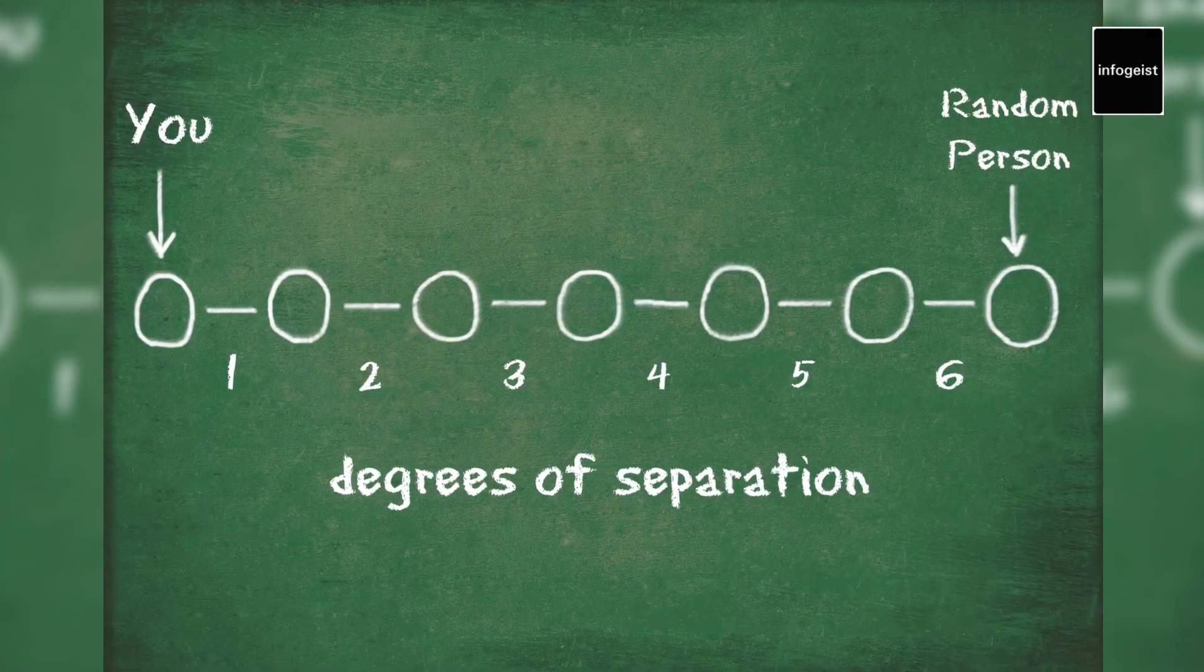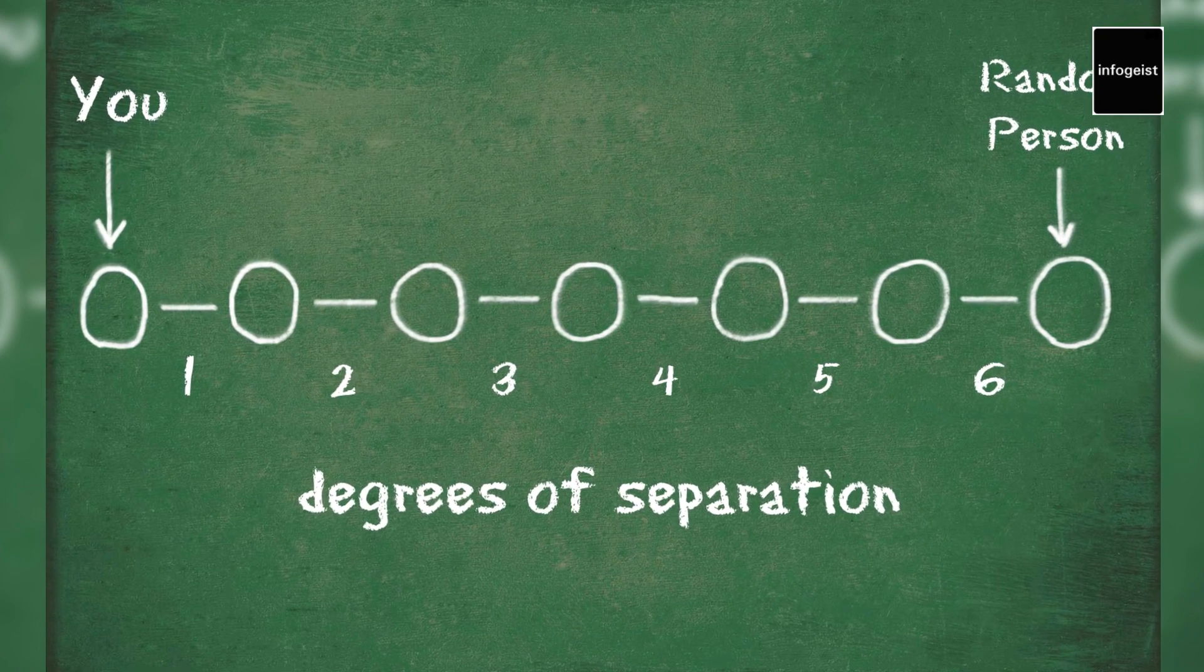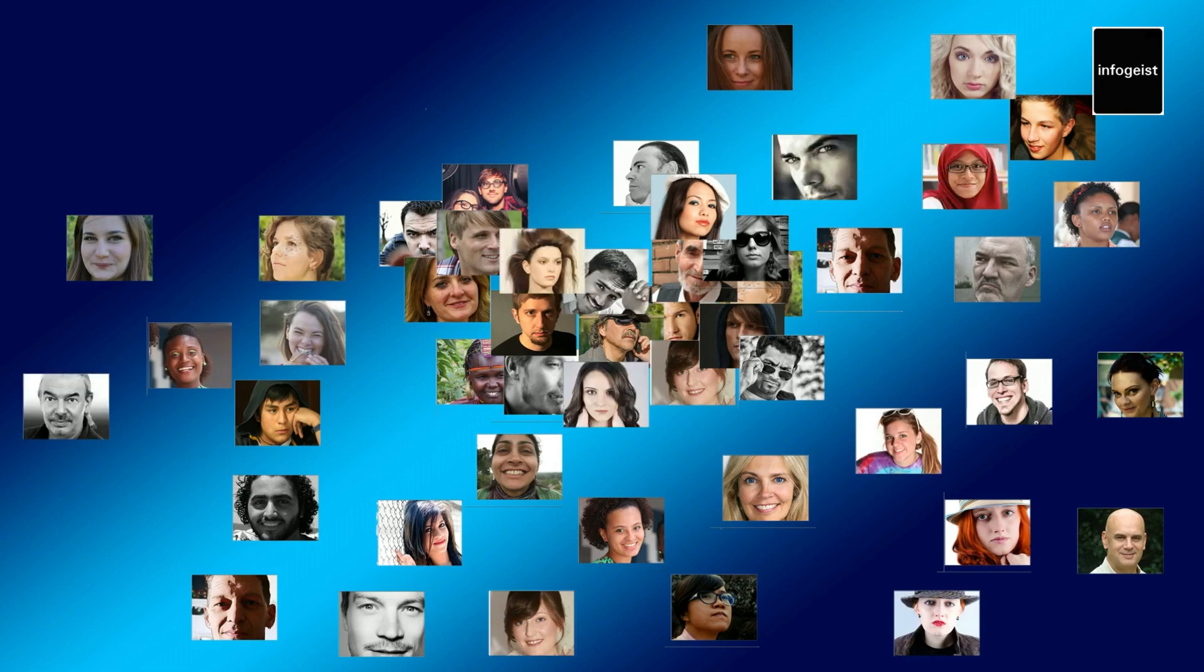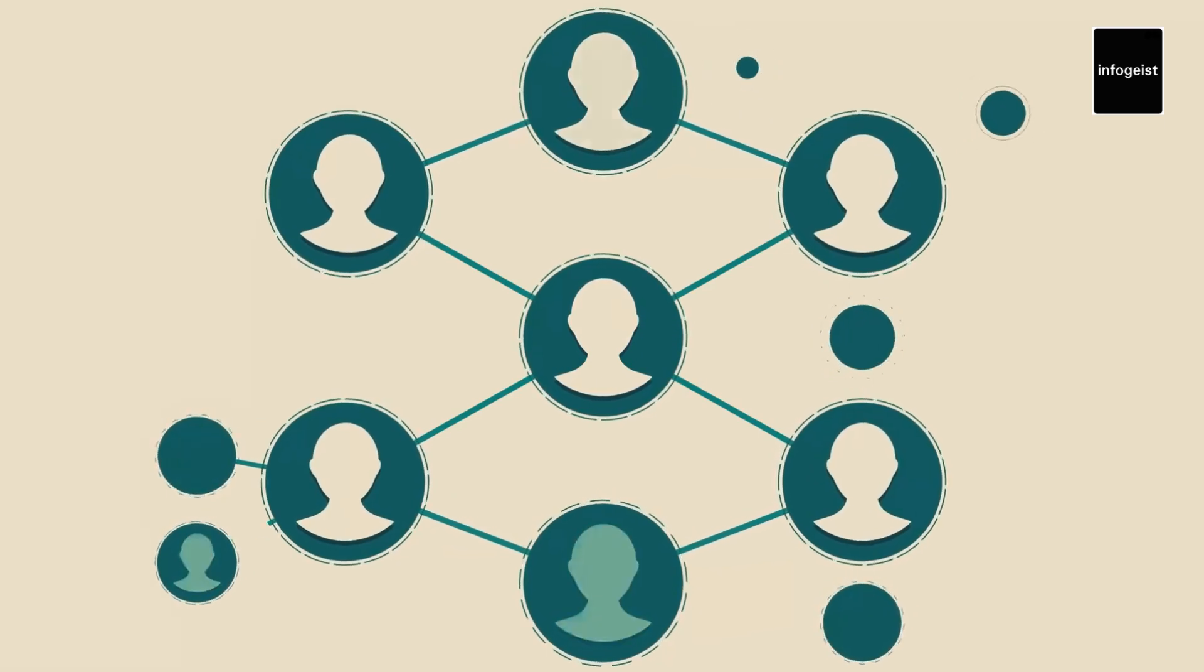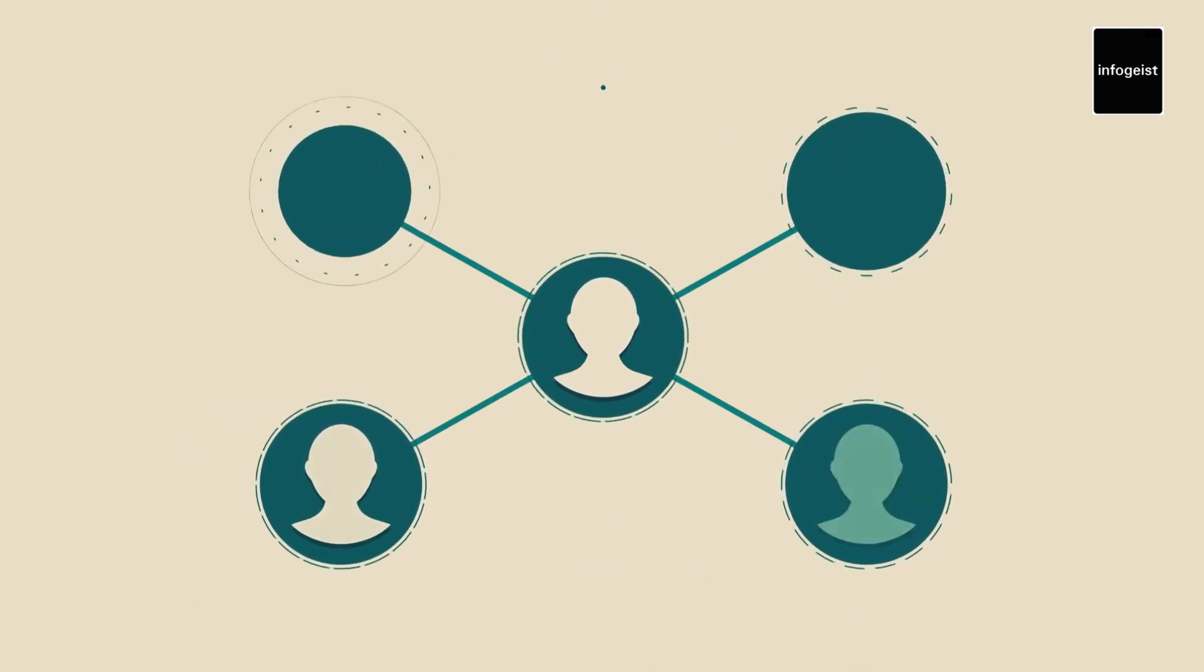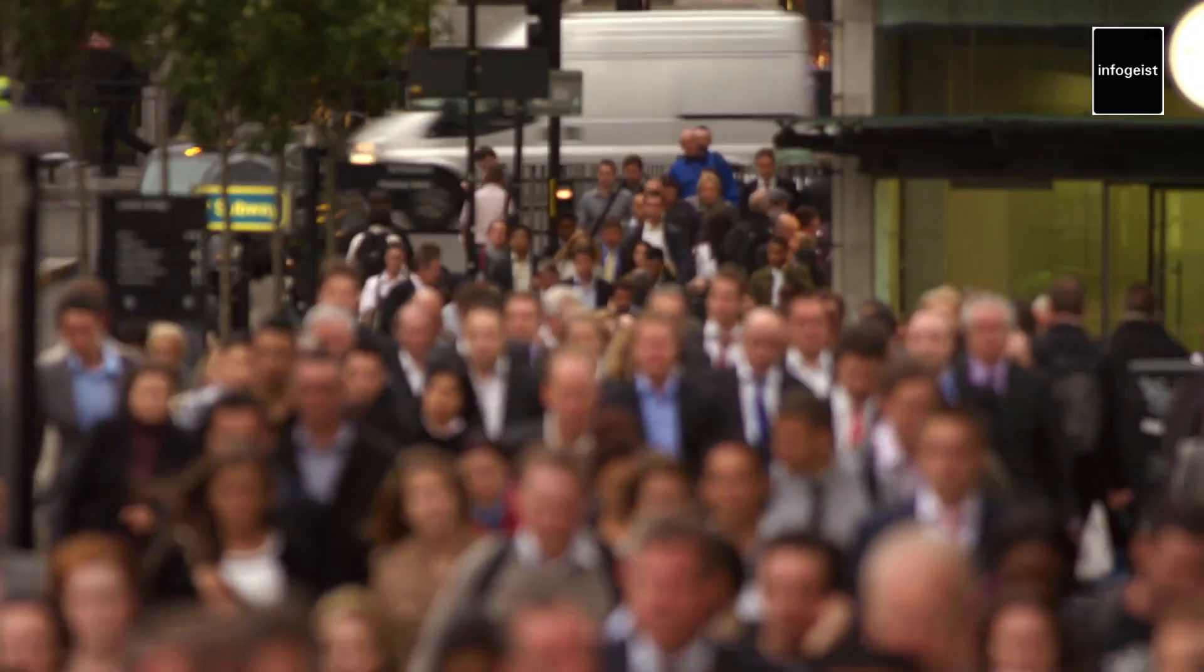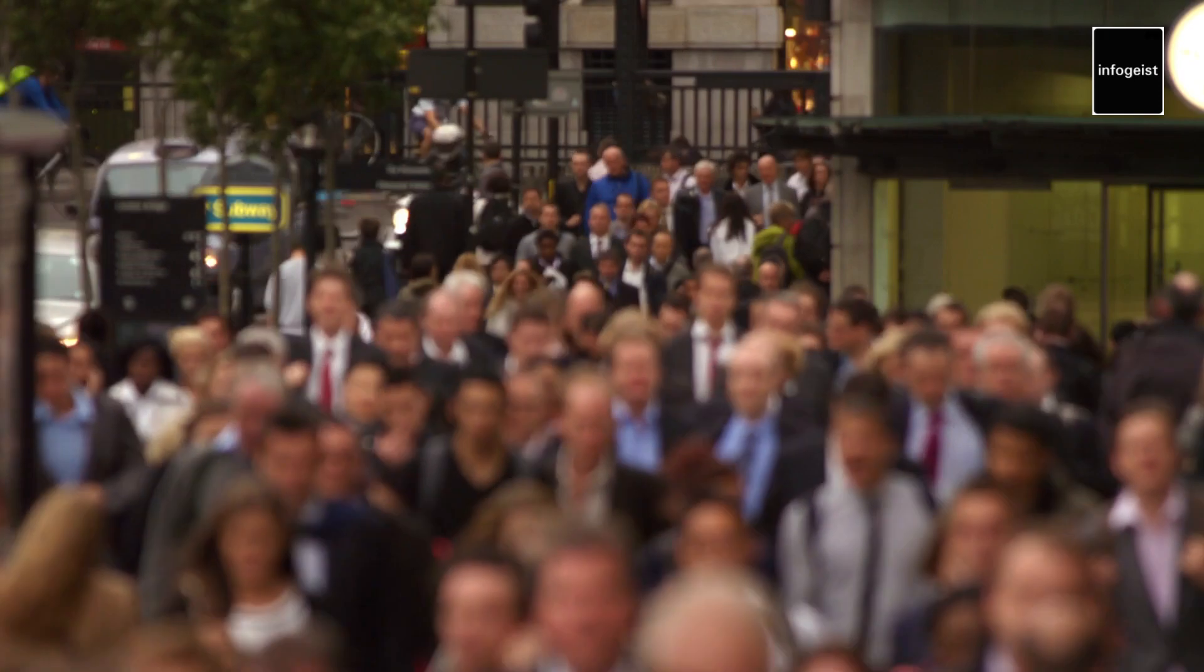In conclusion, six degrees of separation is a captivating concept that highlights the interconnectedness of human society. From its origins in literature to empirical demonstrations in social psychology, the theory has become a lens through which we view the expansive network of relationships that link us all. As we navigate our interconnected world, let's marvel at the unexpected ways in which we are linked to one another. The six degrees of separation remind us that, despite the vastness of our planet, we are all part of a closely knit tapestry of human connections.